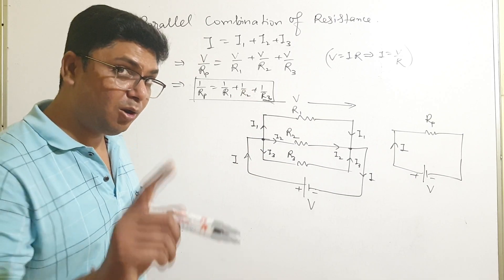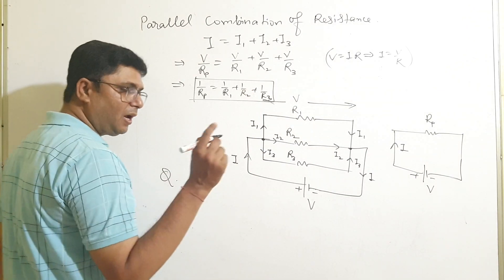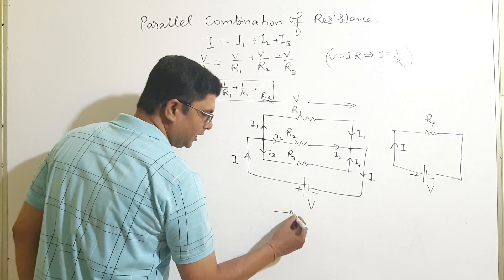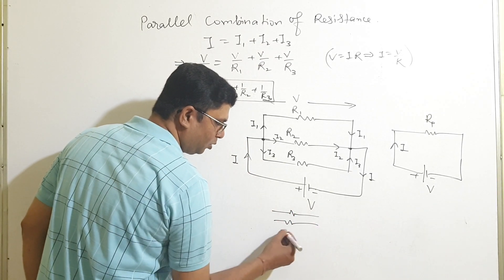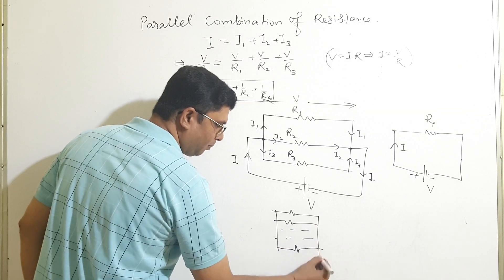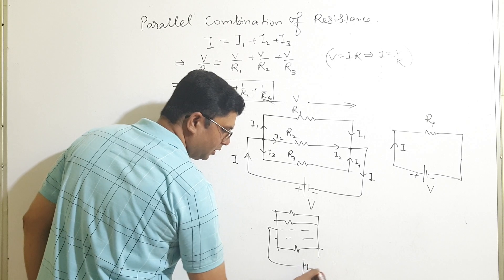Now again let a question. The question is, suppose you have n number of resistance in parallel. This is resistance 1, resistance 2, dot dot dot, resistance n. This is in parallel then across a potential V.